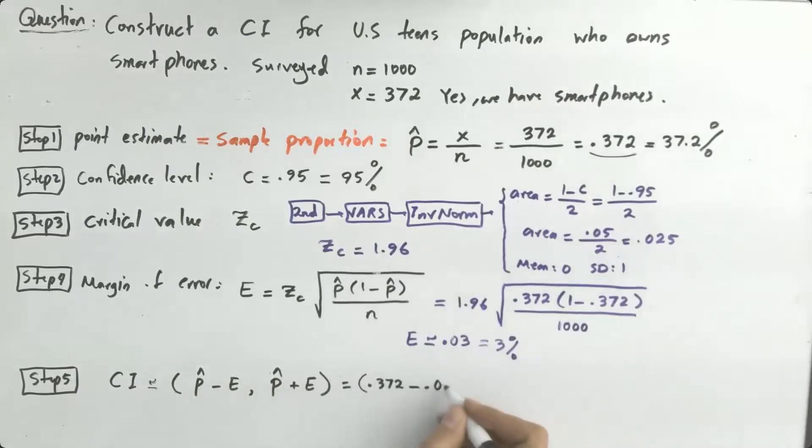of error. So again these are all approximations, so it's going to be p hat which is 0.372 minus the margin of error 0.03, comma, 0.372 plus the margin of error, the distance. So approximately what are we going to have? Our confidence interval is about 34.2 percent, 0.342, and 0.402.